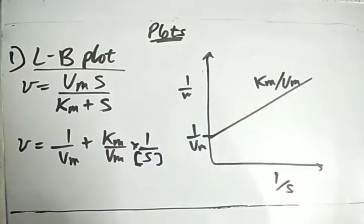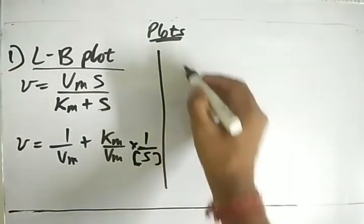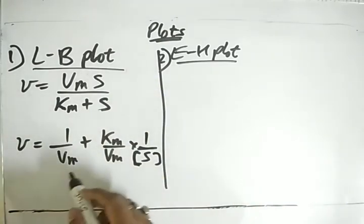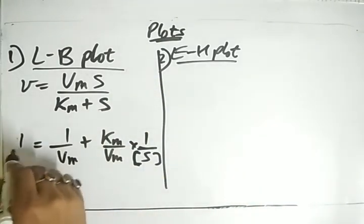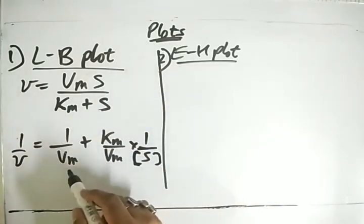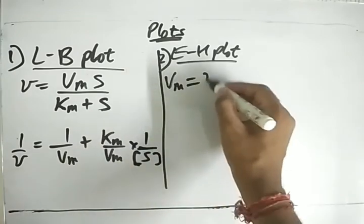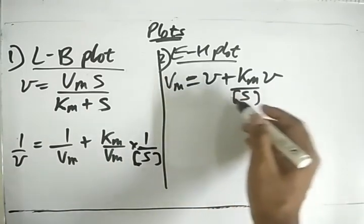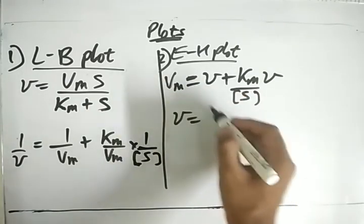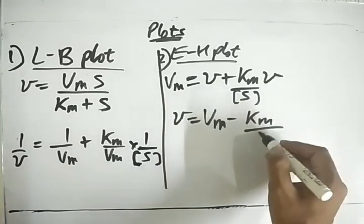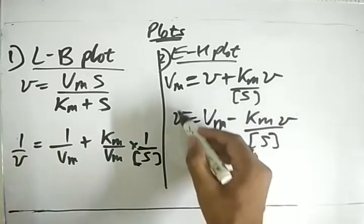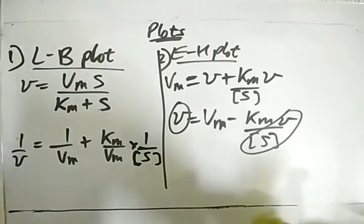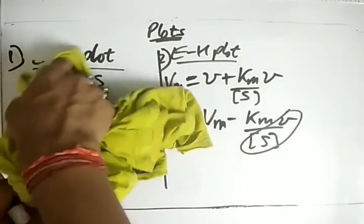The second plot is the Eadie-Hofstee (EH) plot. Rearranging the Michaelis-Menten equation by multiplying through gives Vm = V + Km·V/S, so V = Vm − Km·(V/S). Plotting V versus V/S gives a straight line with a negative slope of −Km and y-intercept Vm.